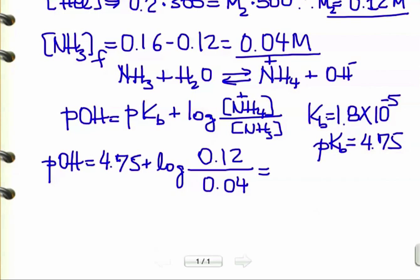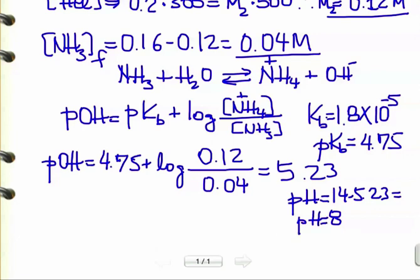We get the POH directly from there. Once we get the POH, we can get the pH because we know the relationship of pH and POH. This gives 5.23. So the pH is going to be 14 minus 5.23, which equals 8.77.